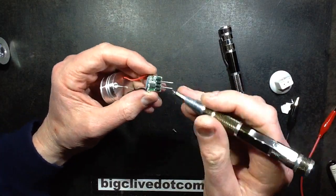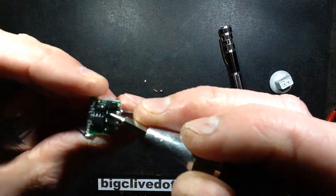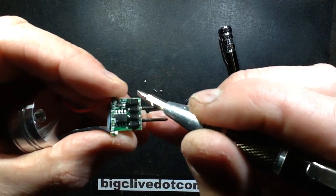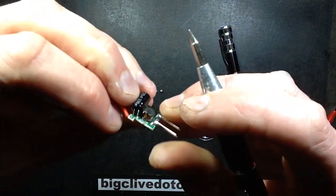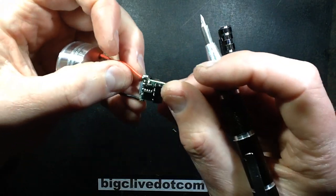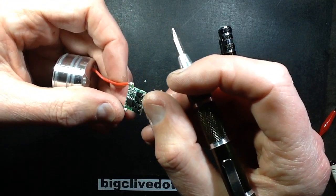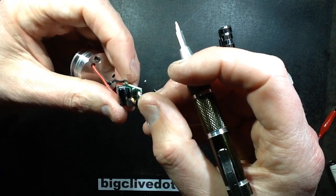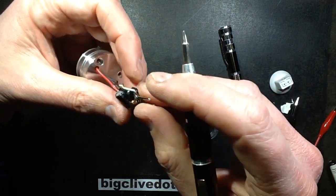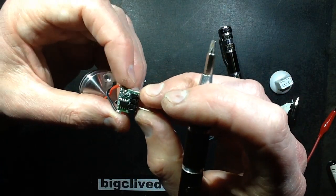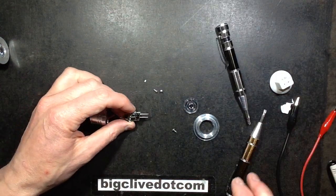Well, there's the bridge rectifier, the four diodes. There's a smoothing capacitor in the back. Is that for the input or the output? I'm not 100% sure. There's the choke and the chip. So what's the chip going to be, I wonder?